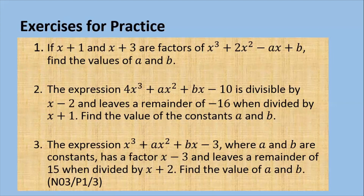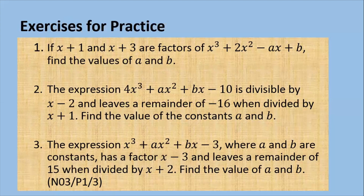Here are a few exercises for you to practice. Question 1: if x plus 1 and x plus 3 are factors of x cubed plus 2x squared minus ax plus b, find the values of a and b. Question 2: the expression 4x cubed plus ax squared plus bx minus 10 is divisible by x minus 2 and leaves a remainder of negative 16 when divided by x plus 1; find the values of the constants a and b. Question 3: the expression x cubed plus ax squared plus bx minus 3, where a and b are constants, has a factor x minus 3 and leaves a remainder of 15 when divided by x plus 2; find the values of a and b.